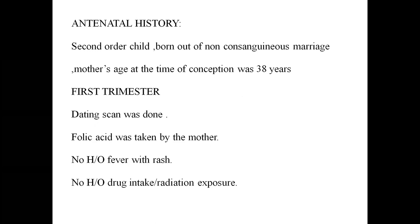Antenatal history is very important for a genetic or syndromic child and should be detailed. Second order child, born out of a non-consanguineous marriage. Mother's age at the time of conception should be clearly mentioned — we know that above 35 years the risk of Down syndrome is very high. Mother's age at conception was 38 years. First trimester dating scan was done, folic acid taken, no history of fever with rash, no drug intake or radiation exposure.